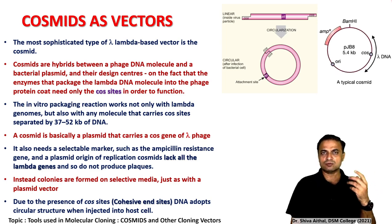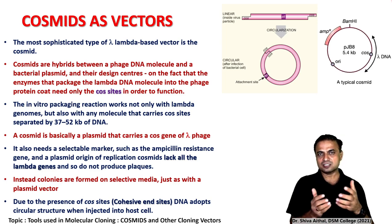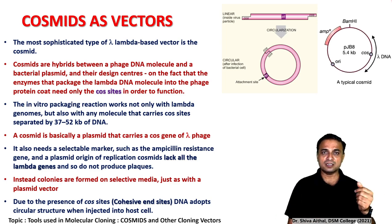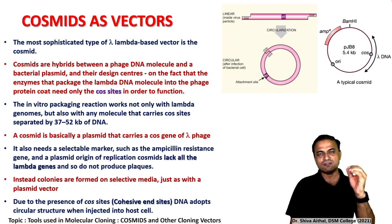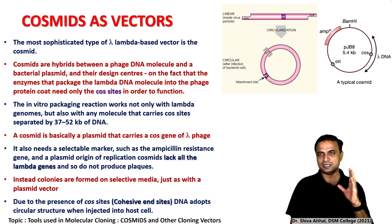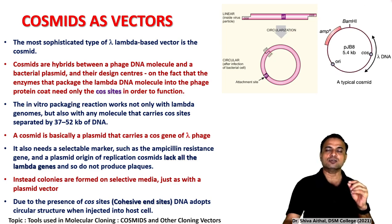We have seen plasmids and phages as vectors. Now let us look at some hybrid areas which genetic engineers have developed. When a process is being worked on routinely, engineers get newer ideas to make more compatible vectors. Cosmid is one such vector. A cosmid is any type of carrier or vector which has the cos site from the lambda phage. The most sophisticated lambda phage-based vector is the cosmid, because it utilizes only the cos site.